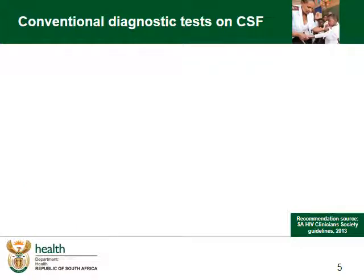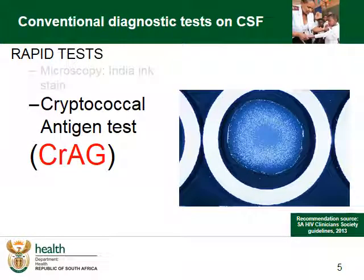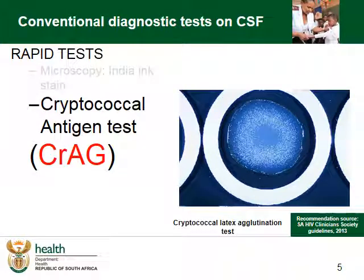The second rapid test is the cryptococcal antigen test, which has a high specificity and sensitivity of more than 95%, so it should always be requested. It may also pick up dead yeast and is therefore not ideal for monitoring patients already on treatment.